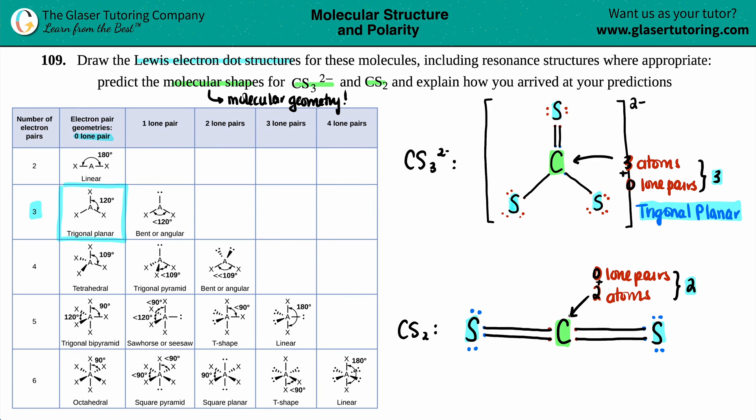And then the same thing for this one, we have a total number of two. So maybe I'll put this in a different color. Two, but for a two-er, you only got one answer. This is linear. Linear always happens when you have two atoms and zero lone pairs.